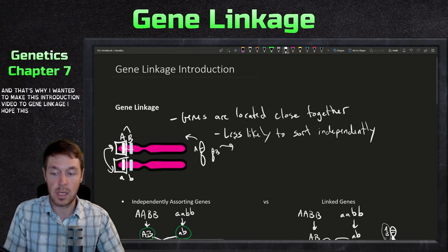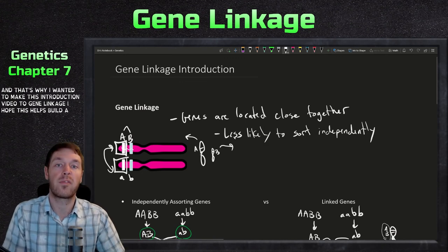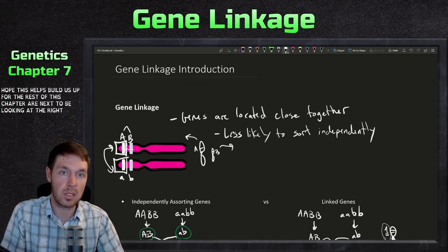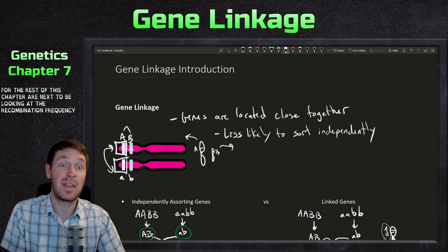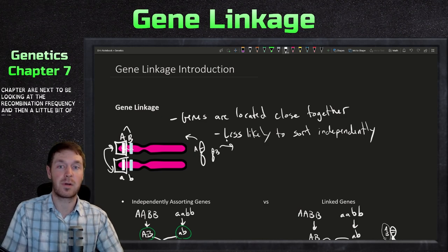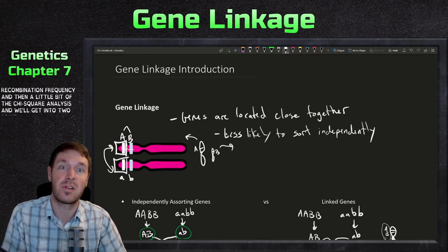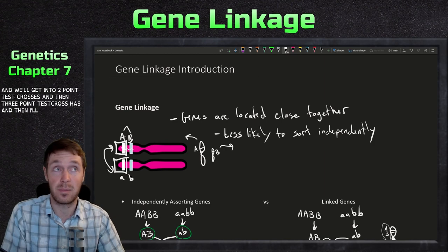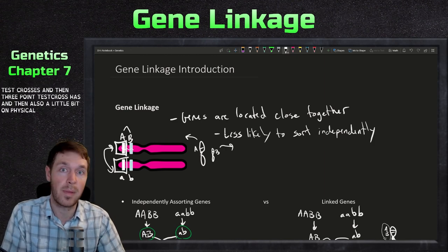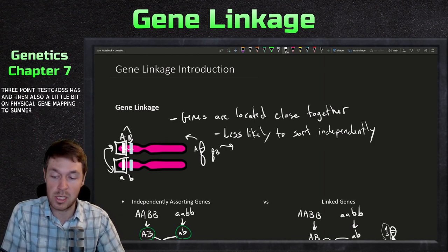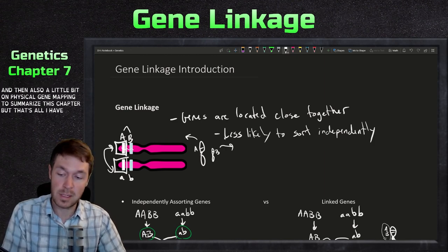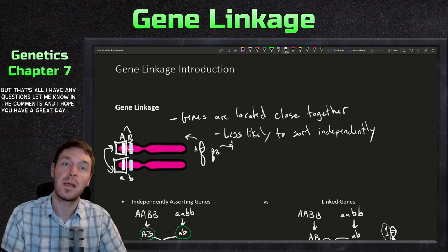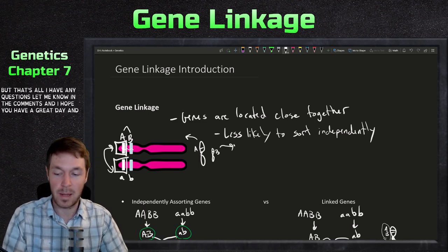That's why I wanted to make this introduction video to gene linkage - to build us up for the rest of this chapter. Next we'll look at recombination frequency, chi-square analysis, two-point test crosses, three-point test crosses, and physical gene mapping to wrap up the chapter. If you have any questions, let me know in the comments. Hope you all have a great day!